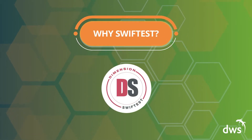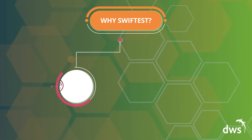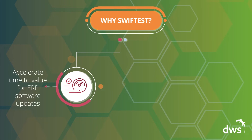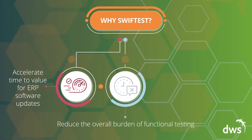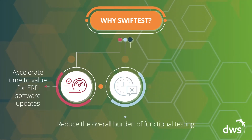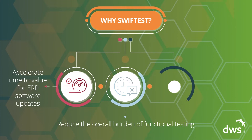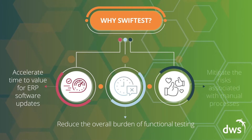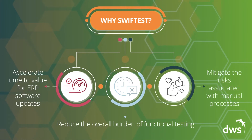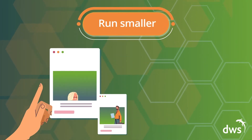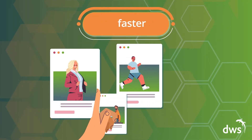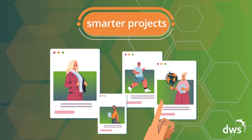What are the main benefits of Swift Test? It can accelerate time to value for ERP software updates. It can also reduce the overall burden of functional testing and mitigate the risks associated with manual processes. All this means you can run smaller, faster, smarter projects.